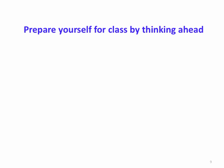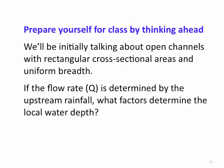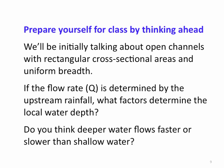Prepare yourself for class by thinking ahead. We'll start with rectangular cross-sectional areas of uniform breadth that don't change going up and down the channel or along the space. Think about this: if the flow rate Q is determined by upstream rainfall, what factors determine the local water depth? And do you think deeper water flows faster or slower than shallow water?